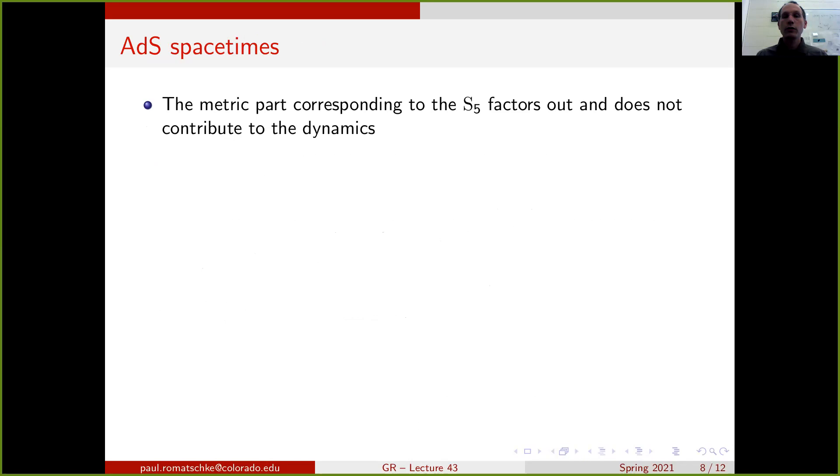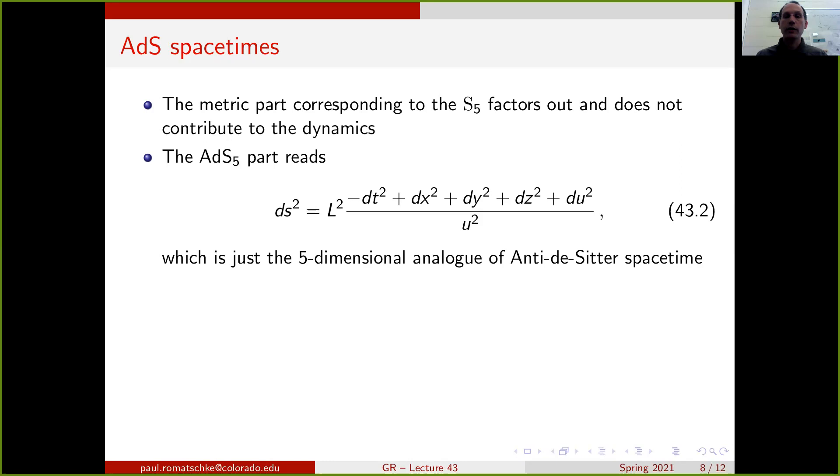It turns out that the metric part corresponding to the S5 just factors out and does not contribute to the dynamics. What we're left with is the AdS5 part, and we can write down the line element for that part explicitly. Just recalling our construction of maximally symmetric spacetimes that we talked about earlier in this course, we can write down the line element for anti-de Sitter space in 5 dimensions. It has 5 coordinates. One of them is time and 4 space coordinates, and then the structure is such that it's divided by one of these coordinates here. L is the radius of the AdS5 part, and this is just the 5-dimensional analog of the anti-de Sitter spacetime that we talked about earlier in this course.